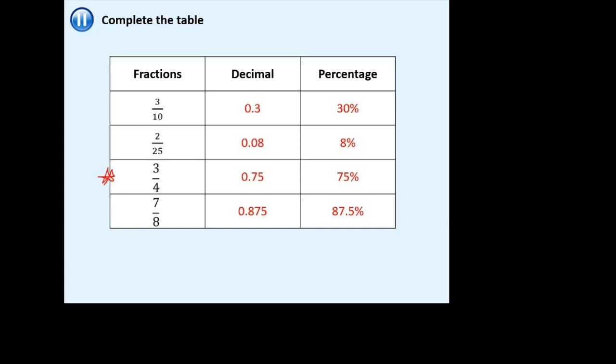Be really careful not to get 80% or 0.8 confused. And 3/10 is 0.3, not 0.03 — be careful about mixing those up. For the final one, do a bus stop: how many eights go into 7. Using the division method with decimal points, you should get 0.875, which you then multiply by 100 to get 87.5%.